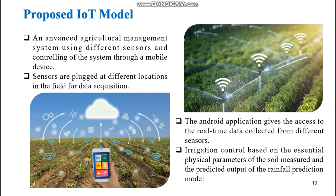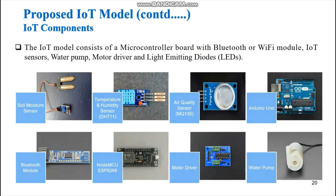Now I will continue with the proposed IoT model. We proposed an advanced agricultural management system using different sensors and controlling the system through a mobile device. Sensors are placed at different locations in the field. The Android application gives access to data collected from the sensors, and we can control the irrigation process based on the collected data and predicted output of the rainfall prediction model.